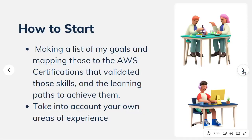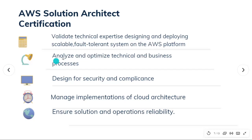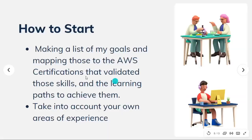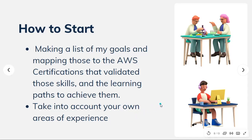To get started, make a list of your goals and map them to the AWS certification exam that validates those skills, then plan the learning needed to achieve them. For example, break down a large goal like 'deploying a scalable system' and see where the certification fits. Take into account your own area of experience — if you're good in networking, use those skills to understand things better. Your background is always your advantage.